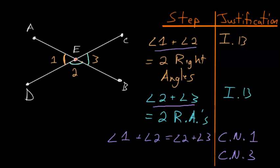Once we subtract angle 2 off, we have that angle 1 is equal to angle 3. Or this angle here is equal to its vertical angle over here. And that is exactly what we sought to prove.